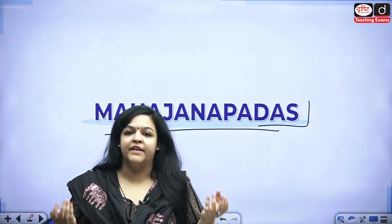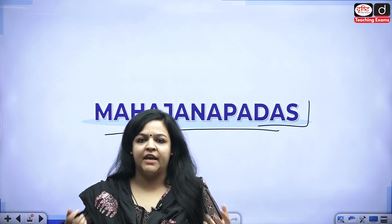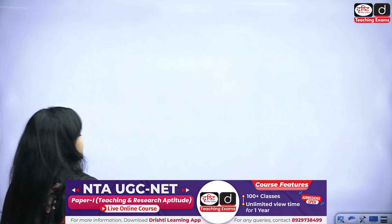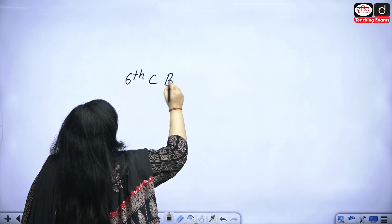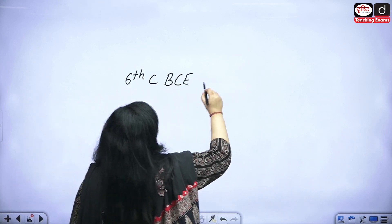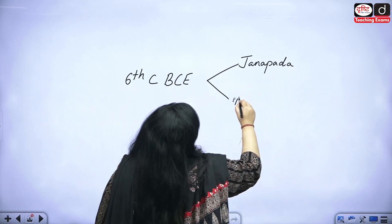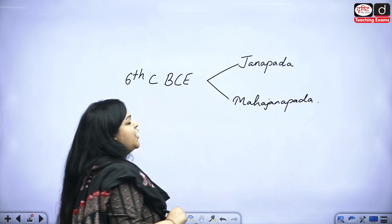Before I start, let me explain what Mahajanpads are. If you remember from the decline of the Indus Valley Civilization, we have the beginning of cities — basically the beginning of Janpads and Mahajanpads. From the sixth century BCE, we have the creation of cities, which are Janpads and Mahajanpads.